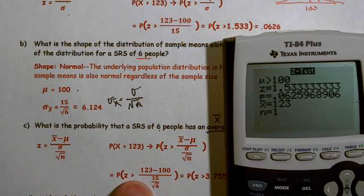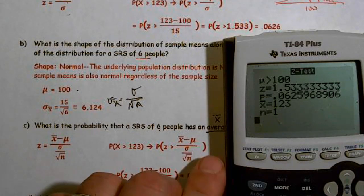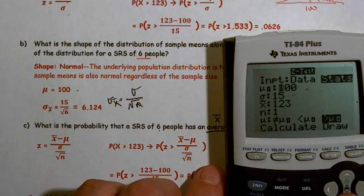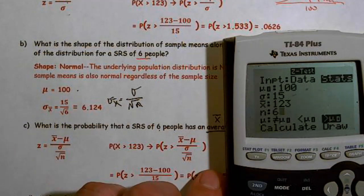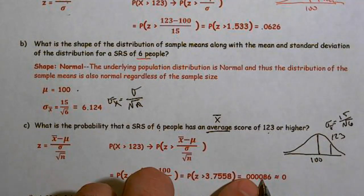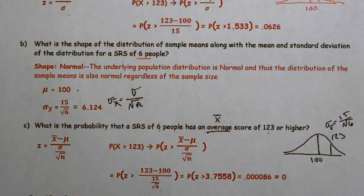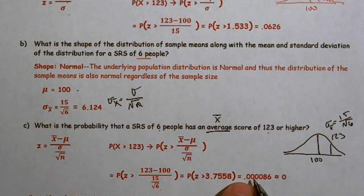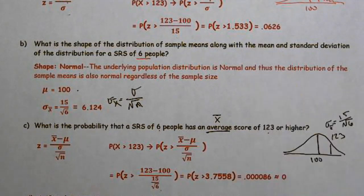Plugging in: z = (123 − 100) / (15/√6). Going to stats → z-test, changing sample size to 6, and calculating, we end up with 0.00086. Having a group average of 123 or higher is a much smaller probability. With four zeros, I say approximately zero. We went from a 6% chance down to a very, very small probability.